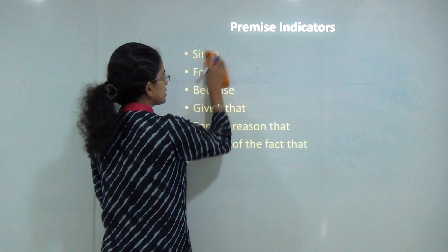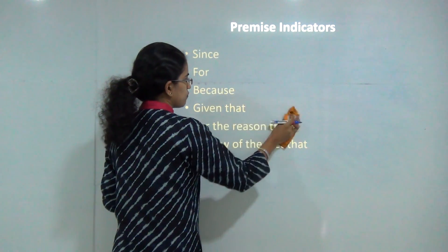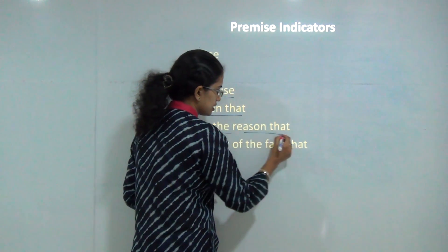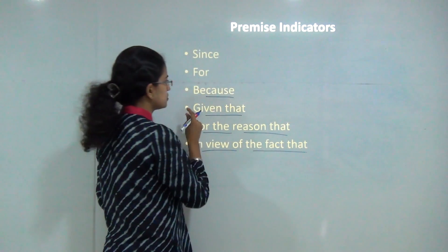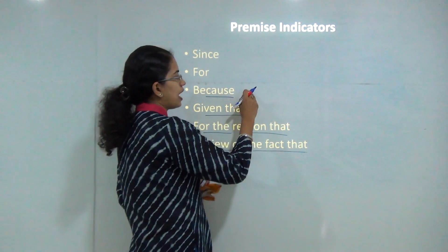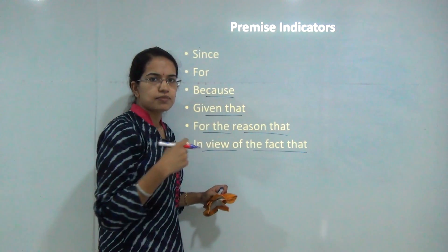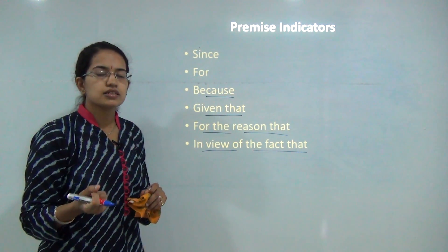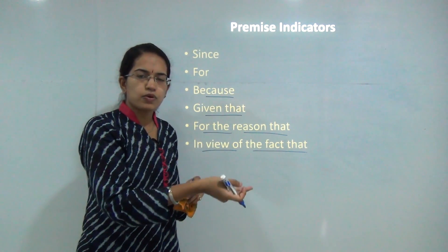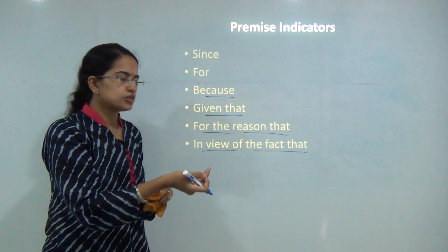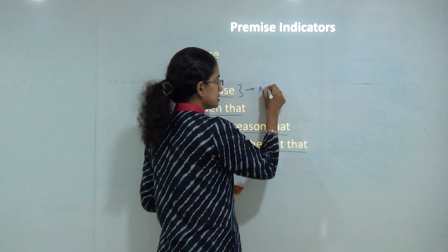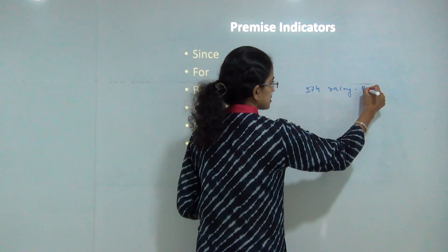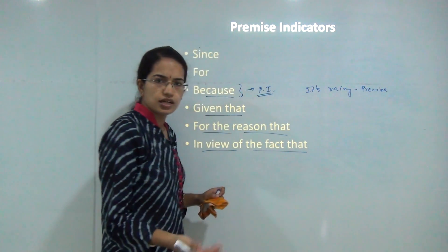You have a list of indicators that help you identify premises. These include: 'since,' 'for,' 'because,' 'given that,' 'for the reason that,' and 'in view of the fact that.' For example: 'I am not going to school today because it is raining.' Here 'it is raining' is the evidence supporting the conclusion 'I am not going to school,' so 'because' becomes a premise indicator.